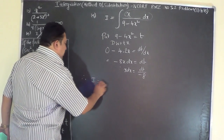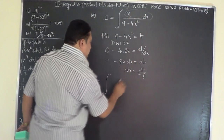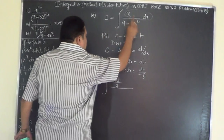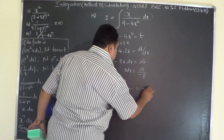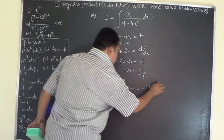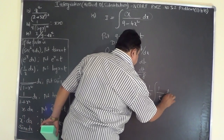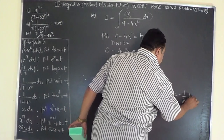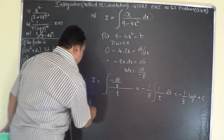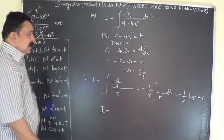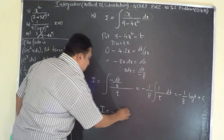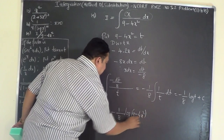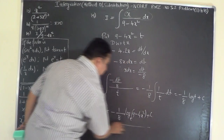The integral now becomes I equals the integral of (−dt/8) / t, which equals −(1/8) times the integral of (1/t) dt. Since the integration of 1/t is log t, we get I = −(1/8) × log t + C. Substituting back t = 9 − 4x², the final answer is I = −(1/8) × log(9 − 4x²) + C.